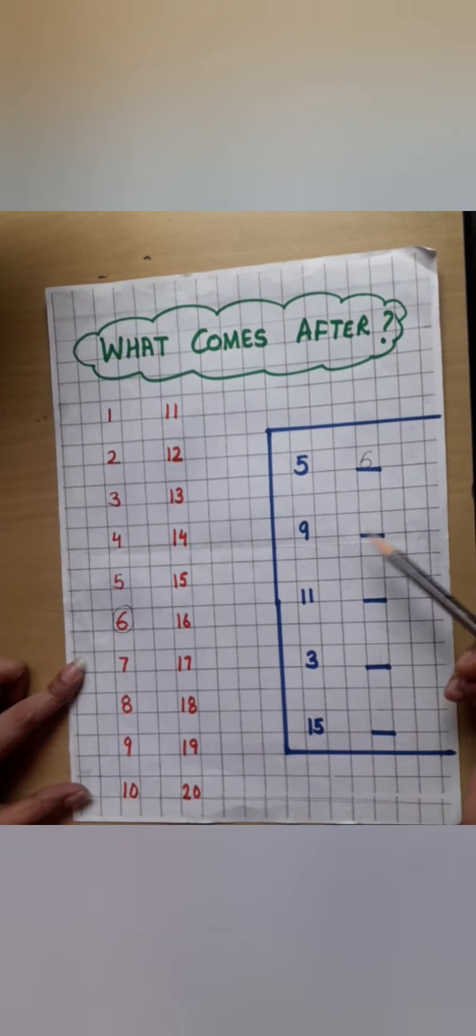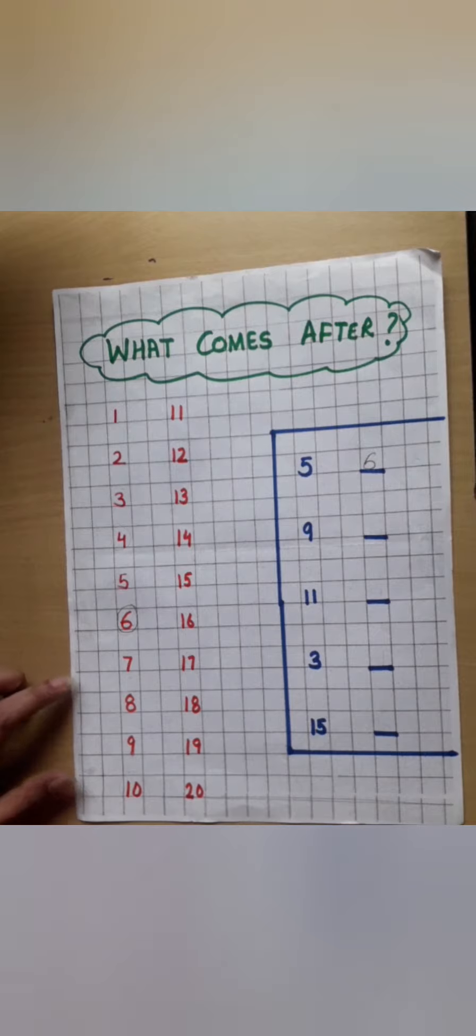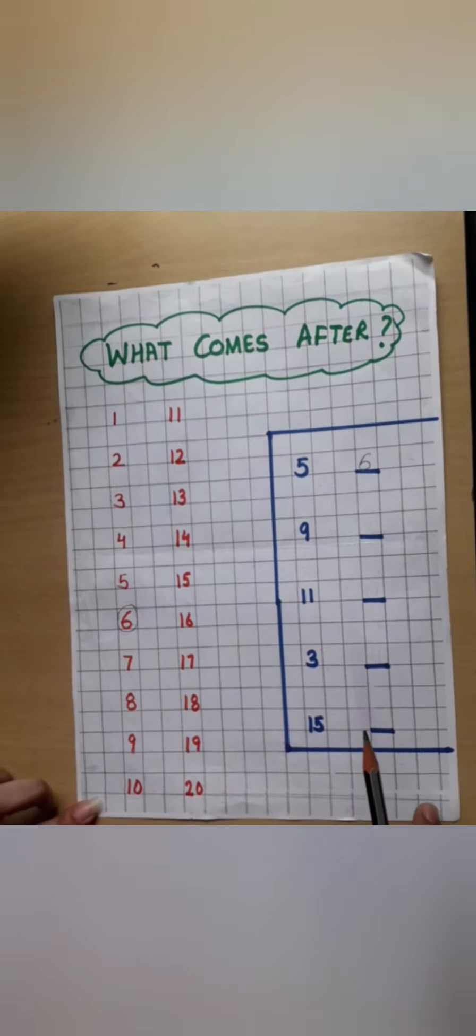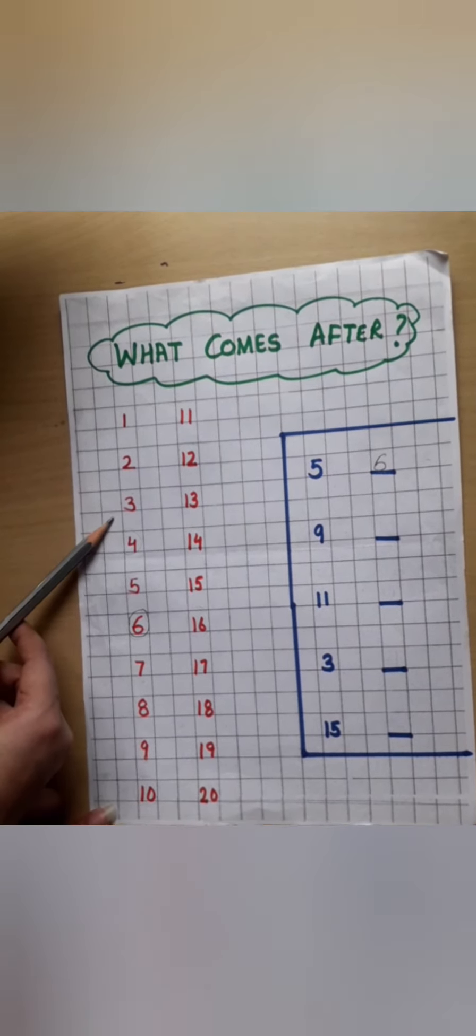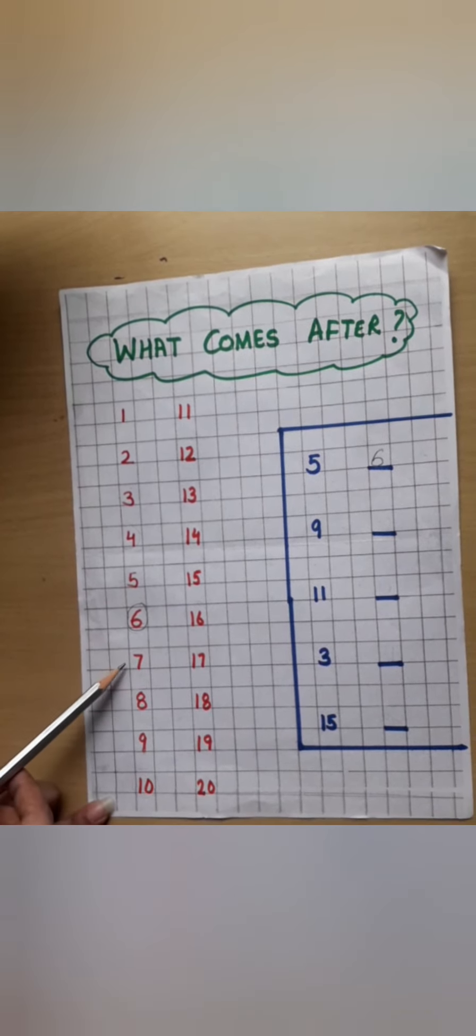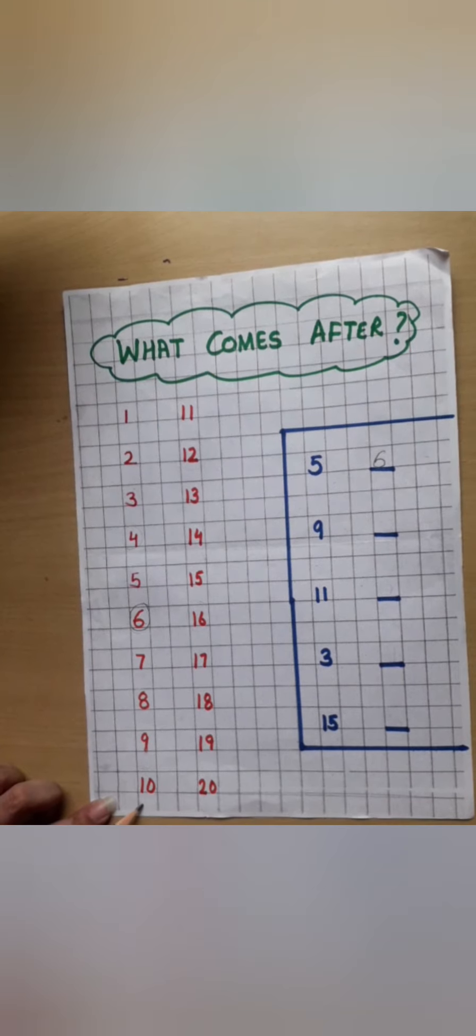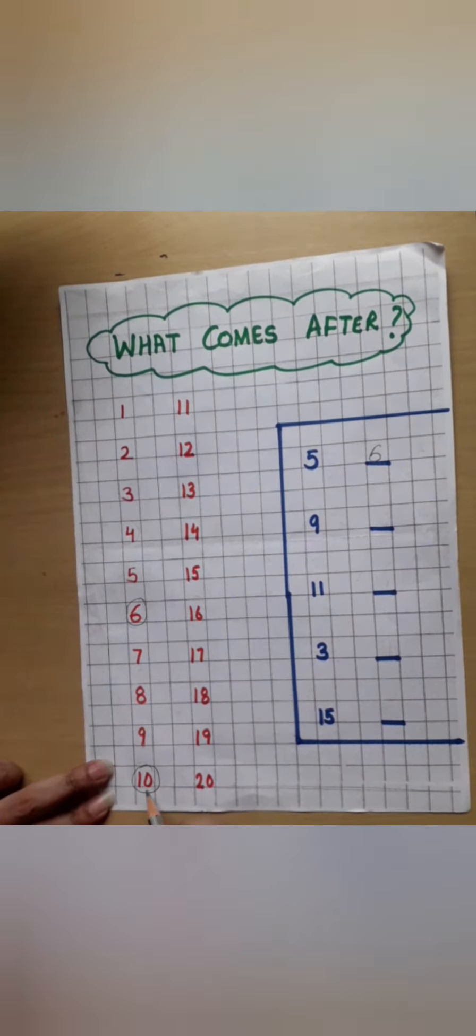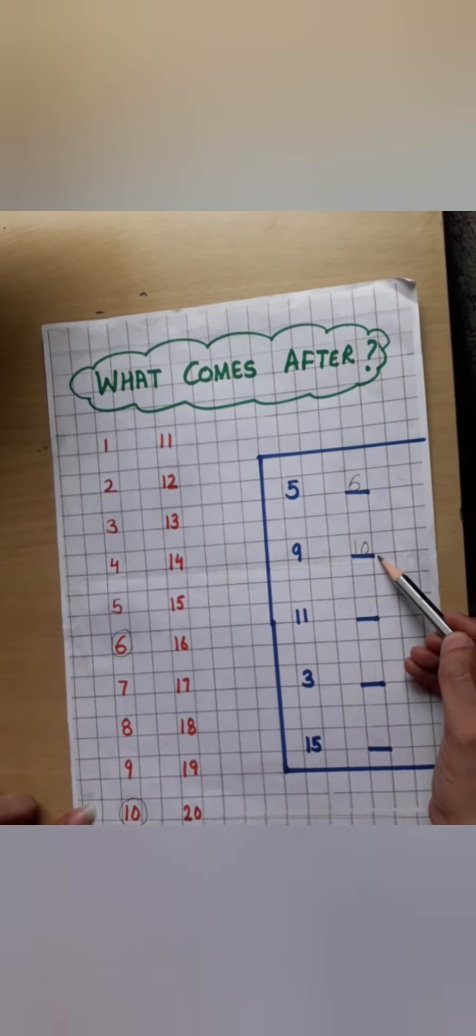Now tell me which number is this? Yes, the number 9. Now what comes after 9? Tell me. Yes, do the counting. 1, 2, 3, 4, 5, 6, 7, 8, 9. What comes after 9? Yes, the number 10. Now write the number 10 here. Yes, this is the number 10.